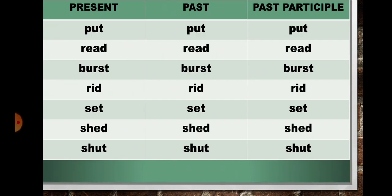In present if it is 'burst' (b-u-r-s-t), so in past also it will be 'burst', and in past participle form also it will be 'burst'. In present if it is 'rid' (r-i-d), so in past also it will be 'rid', and in past participle form also it will be 'rid'. In present if it is 'set' (s-e-t), so in past also it will be 'set', and in past participle form also it will be 'set'.